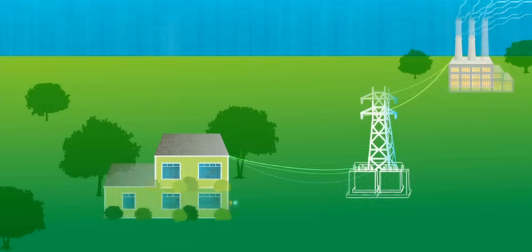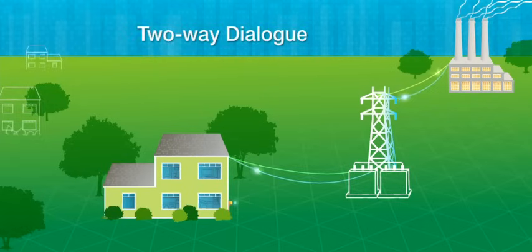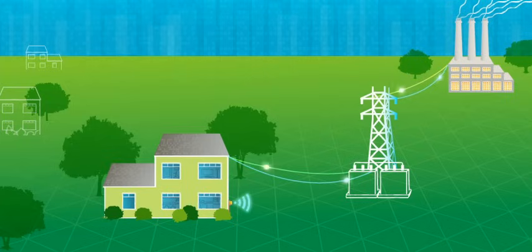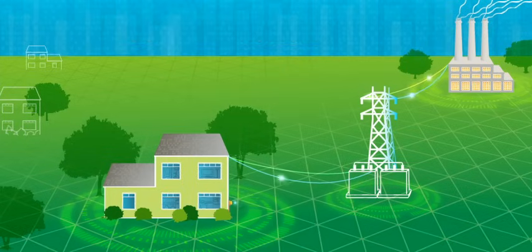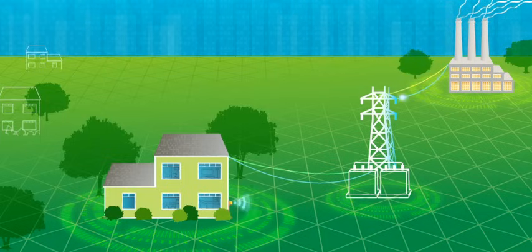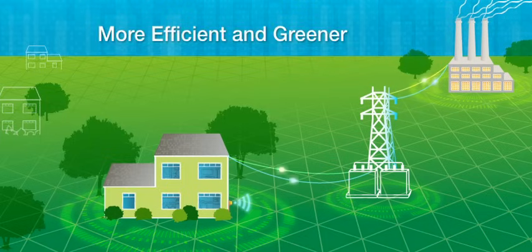The smart grid introduces a two-way dialogue where electricity and information can be exchanged between the utility and its customers. It's a developing network of communications, controls, computers, automation, and new technologies and tools working together to make the grid more efficient, more reliable, more secure, and greener.